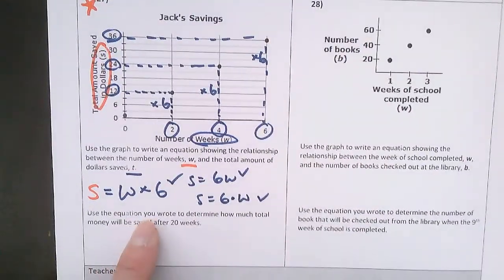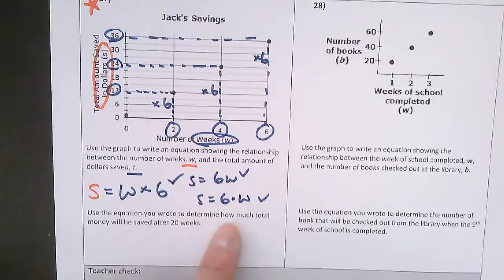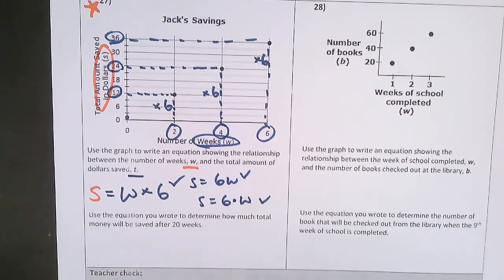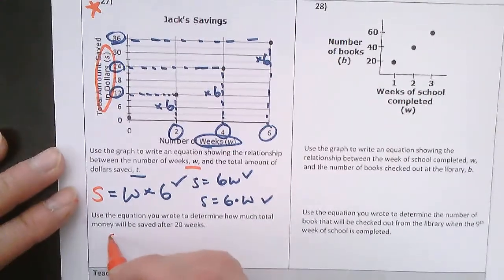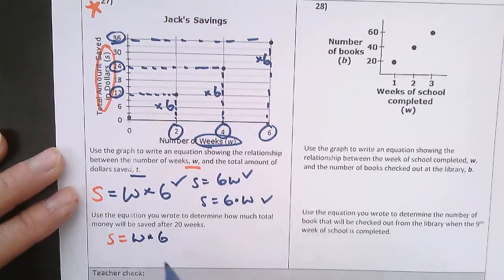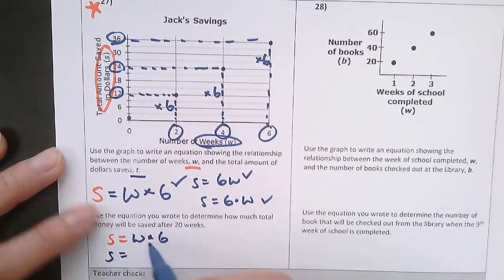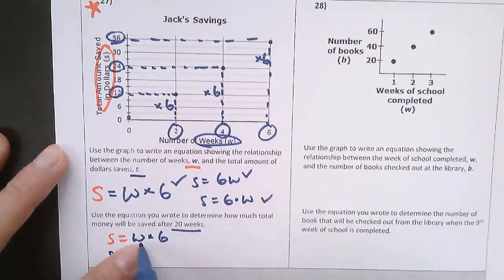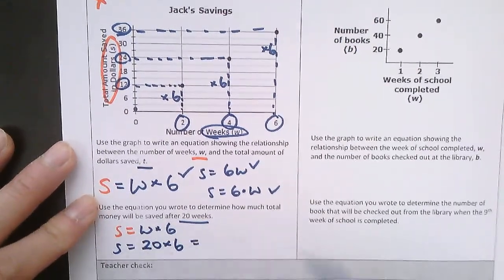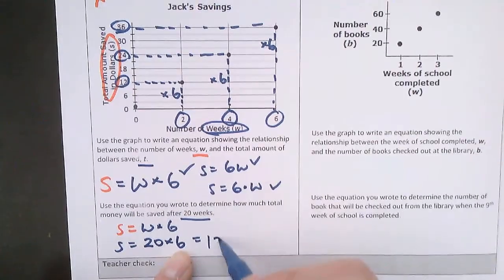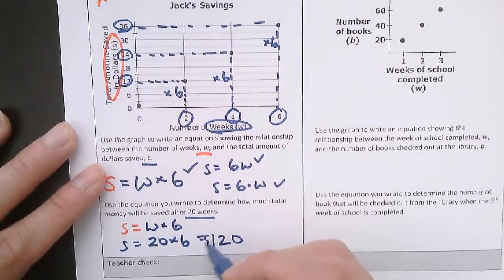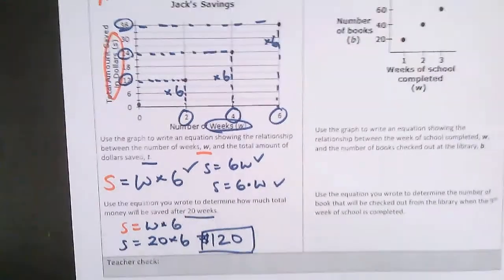Last one. Use the equation you wrote to determine how much total money will be saved after 20 weeks. Well, if I know that the amount that I save is equal to the number of weeks times 6, then the amount that I save is equal to, if it's 20 weeks, that's the number of weeks, so 20 times 6. 20 times 6 is? Well, 2 times 6 is 12, add the 0, 120, $120. There's my answer.